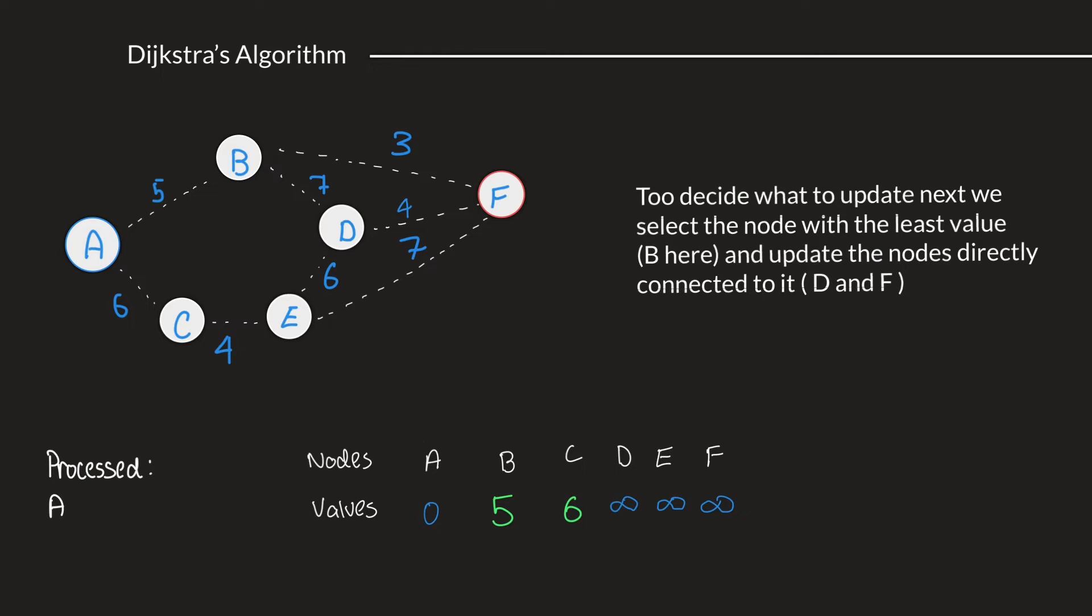To go to D, we'd first have to take the path from A to B, and then B to D. So, in this case, that would be 5 and then plus 7. So, we erase the infinity sign that is under D, and update that value to 12, 5 plus 7.